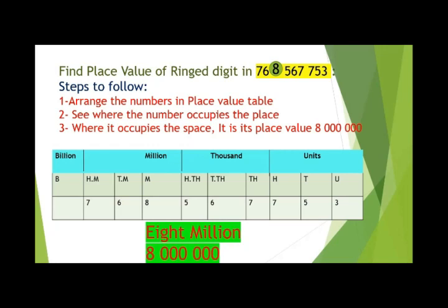Arrange the number in the place value table. See where the number occupies the place — that is its place value. We start writing the number in the place value table from the right. Now the ringed digit, that is the eight, is in the million box.